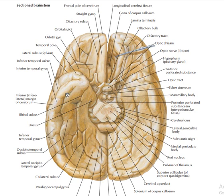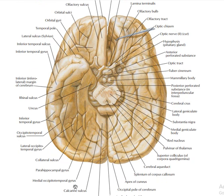This is the lamina terminalis. This is the olfactory bulb, which enters through the cribriform plate. This part is the olfactory tract. You have the optic chiasm, which is located directly anterior to the pituitary gland or the hypothalamus. We have the anterior perforated substance and the posterior perforated substance.